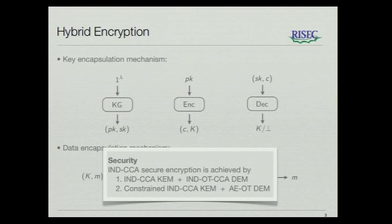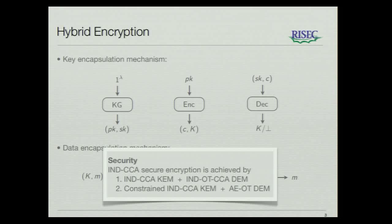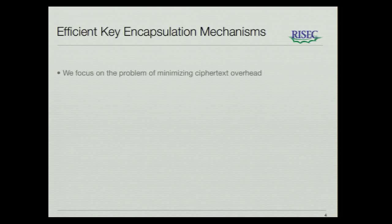If the KEM is IND-CCA secure and the DEM is one-time CCA secure, we will obtain an IND-CCA secure encryption scheme. Alternatively, we could use a slightly weaker KEM, and if this is constrained IND-CCA secure, then we will have to use an authenticated DEM to achieve IND-CCA security. In this talk, I'm going to focus on the problem of minimizing ciphertext overhead. In the hybrid encryption scheme, the ciphertext overhead is dominated by the KEM, so we are going to focus on the KEMs.